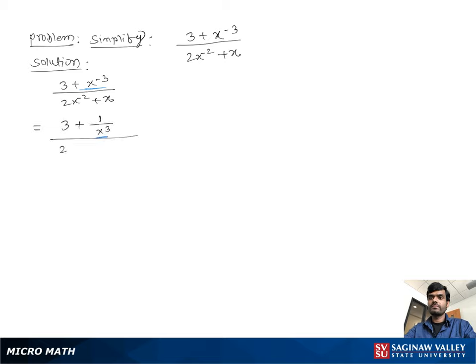Over 2 times 1 over x square which makes the negative x to the negative radical as a positive radical plus x.